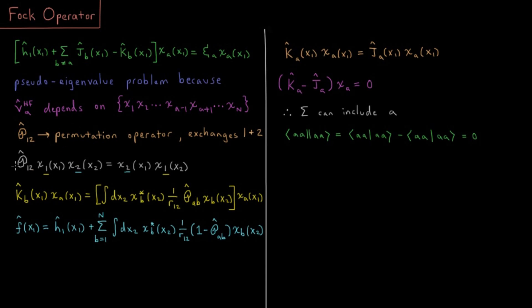For example, if we have the permutation operator acting on electron one in spin orbital one and electron two in spin orbital two, then the result would be that now electron one is in spin orbital two and electron two is in spin orbital one.